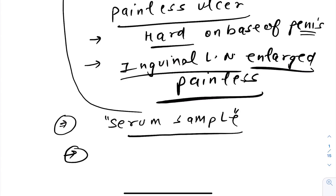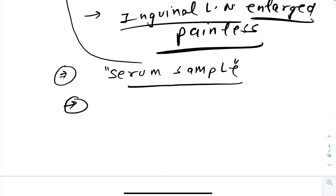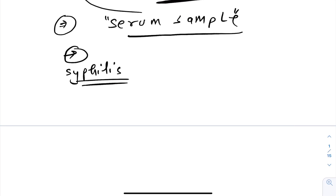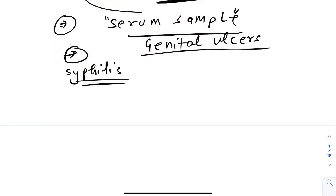Before starting, there is an important table from Harrison that gives the differences between various genital ulcers — one or two questions definitely come from this table. The genital ulcers topic is a sure question in viva, and in NEET PG or NEXT exams. The diseases covered are: syphilis, herpes, chancroid, LGV, and donovanosis.